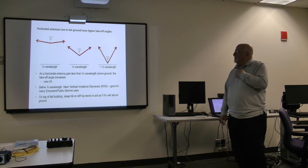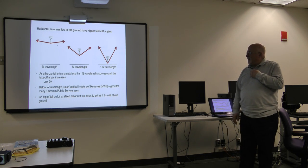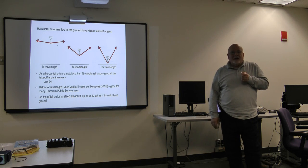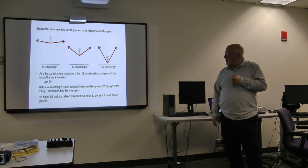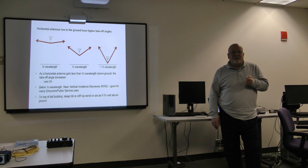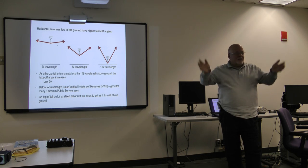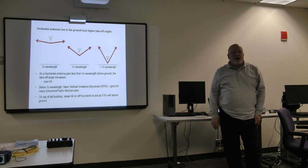Let's remember the horizontal antennas low to the ground have higher takeoff angles. If you've got a 40 meter antenna and you've only got it up 10 feet, that's well below a quarter wavelength. That's going to be an NVIS antenna. The signal is going to go up, bounce off the ionosphere, come back down with about a hundred-mile radius.